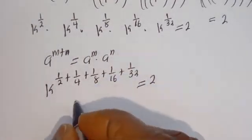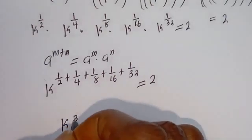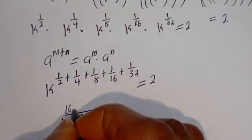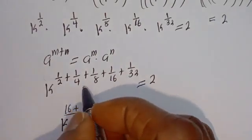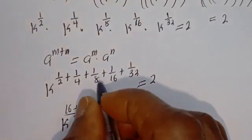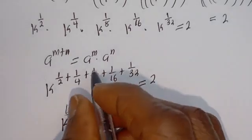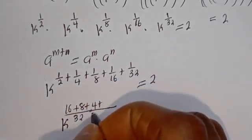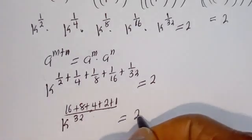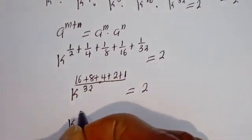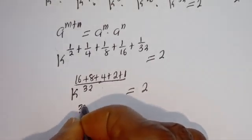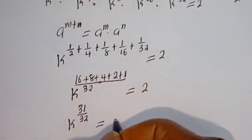The common denominator here is 32. So: 1 over 2 gives 16 over 32; 1 over 4 gives 8 over 32; 1 over 8 gives 4 over 32; 1 over 16 gives 2 over 32; and 1 over 32 gives 1 over 32. That is k to the power of 16 plus 8 plus 4 plus 2 plus 1, all over 32, equals 2. Adding: 16 plus 8 is 24, plus 4 is 28, plus 2 is 30, plus 1 is 31. So k to the power of 31 over 32 equals 2.